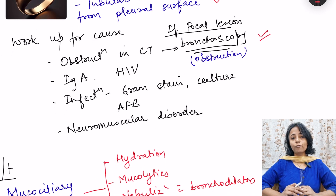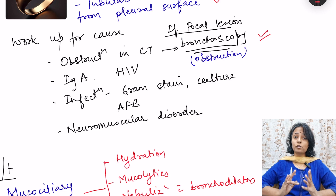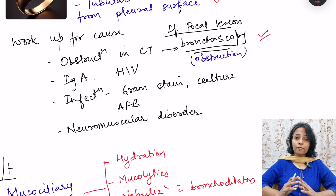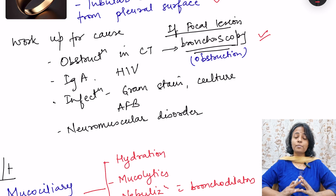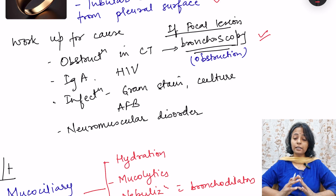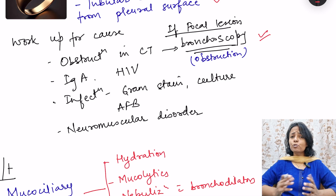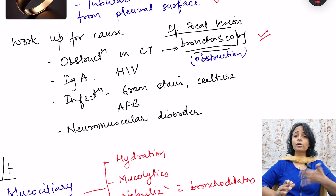We have to look for immunodeficiency by checking IgA levels and investigating for HIV. We check for the infecting organism by gram staining, and for acid-fast bacillus since post-tubercular bronchiectasis can also develop. We also check for any neuromuscular disorder causing repeated aspirations.